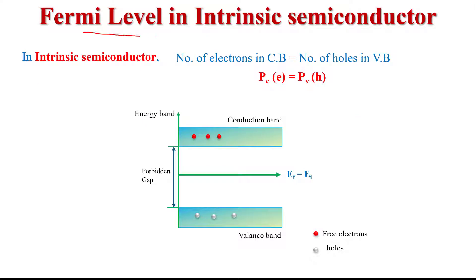Now, Fermi level in intrinsic semiconductor. We know that there are two types of semiconductor material: intrinsic semiconductor material and extrinsic semiconductor material. The pure semiconductor material is called intrinsic semiconductor material. In the case of intrinsic semiconductor material, the number of electrons in the conduction band is equal to the number of holes in the valence band.